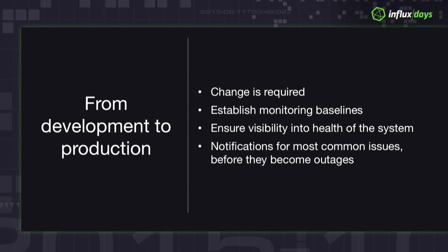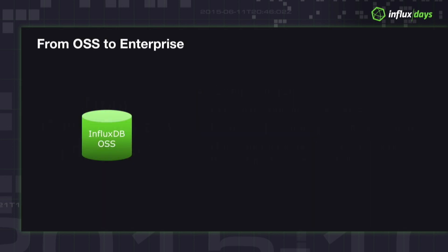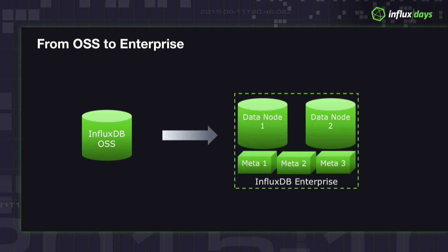Notifications for the most common issues — this is all about establishing telemetry. How do you know the health and availability of the service you're running and providing to others? How do you know when it's going off the rails? As you go from the open source single-instance database to something with a minimum configuration of three meta nodes and two data nodes, obviously there's more to look at, manage, and monitor.